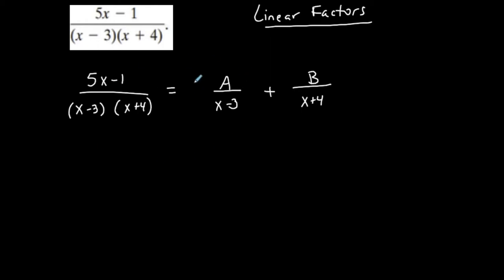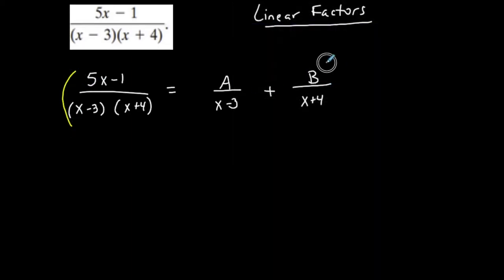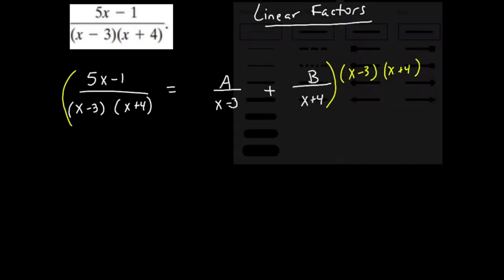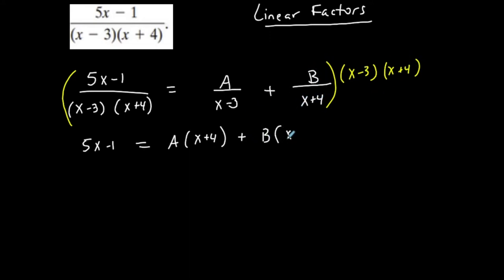So 5x minus 1 over (x minus 3)(x plus 4) is going to be decomposed into two separate fractions. This is basically a rational equation, so I multiply everything by the common denominator, which is (x minus 3)(x plus 4). The denominator cancels on the left, leaving the numerator. Then (x minus 3) cancels in the first fraction, leaving A times (x plus 4). And (x plus 4) cancels in the second, leaving B times (x minus 3).